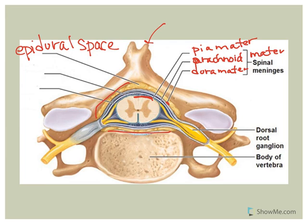The dura mater also helps form what we call the coccygeal ligament. The coccygeal ligament helps provide vertical stability to the spinal cord. The dura mater in the spinal cord helps to form that coccygeal ligament. The dura mater is not directly attached to the vertebrae except at the very uppermost cervical vertebra.